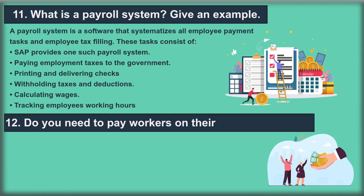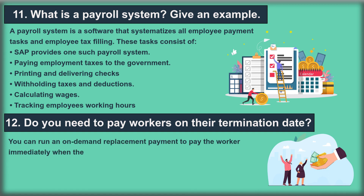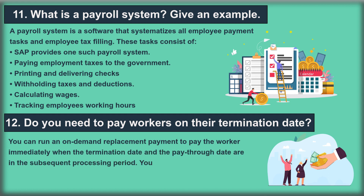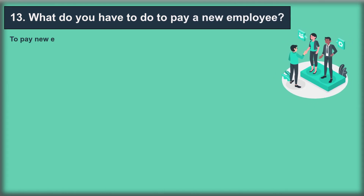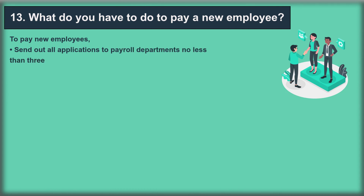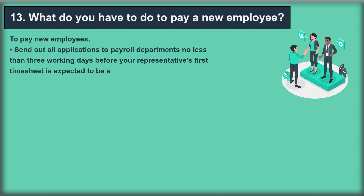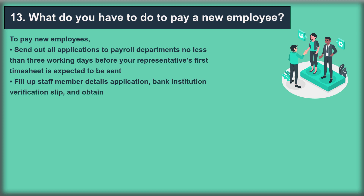Question 12: Do you need to pay workers on their termination date? You can run an on-demand replacement payment to pay the worker immediately when the termination date and the pay-through date are in the subsequent processing period. You can also enable non-payroll administrators to print a check on demand. Question 13: What do you have to do to pay a new employee? Send all applications to the payroll department no less than three working days before the first timesheet is expected. Fill up the staff member details application, bank institution verification slip, and obtain a completed tax form.